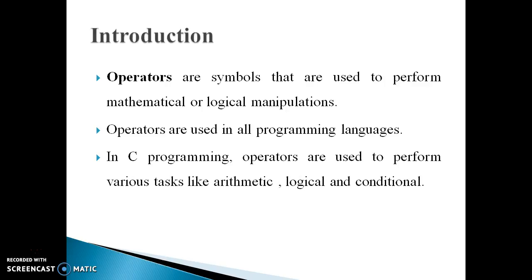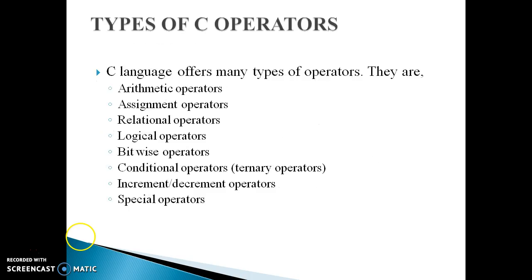Let's see what an operator is. C programming has various operators to perform tasks including arithmetic, conditional, and bitwise operations. An operator is a symbol that is used to perform mathematical or logical operations and other manipulations. An operator is a symbol which operates on a value or on a variable. Operators are used in all programming languages, and in C programming they are used to perform various tasks like arithmetic, logical, and conditional operations.